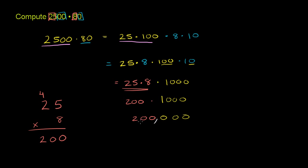So 2,500 times 80 is 200,000. You could have multiplied it out in the traditional sense, but it's good to see this—I guess you could call it a trick, or a way to do it in your head a little bit. And you'll see that more and more the more practice you get.